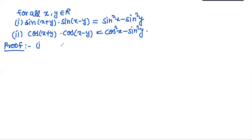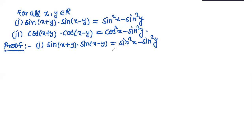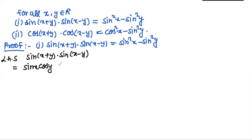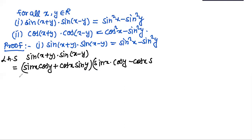Deriving the first identity: sin(x + y) · sin(x − y) = sin²x − sin²y. Starting with the left hand side, we expand: sin(x + y) = sin x cos y + cos x sin y, and sin(x − y) = sin x cos y − cos x sin y. This is of the form (a + b)(a − b) = a² − b², giving sin²x cos²y − cos²x sin²y.